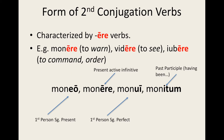In lesson 3 I mentioned that there are four classes of Latin verbs. We refer to these classes as conjugations. The conjugation of a verb is typically defined by its present infinitive ending. As we saw in lesson 3, first conjugation verbs have a present active infinitive which ends in -āre, where the a is long.